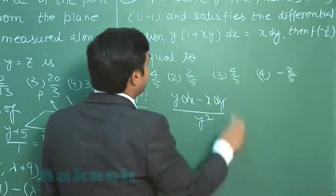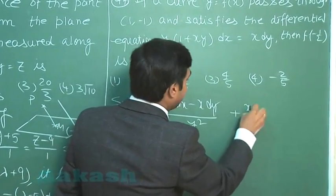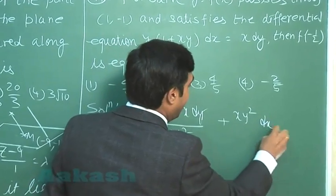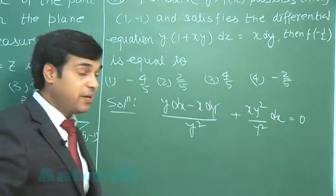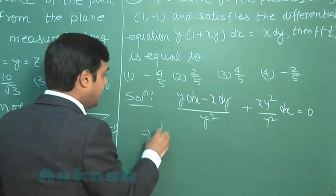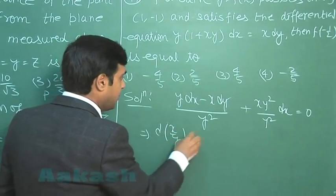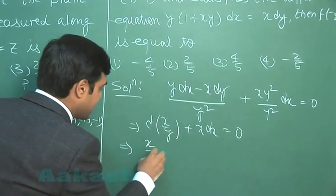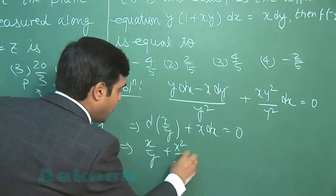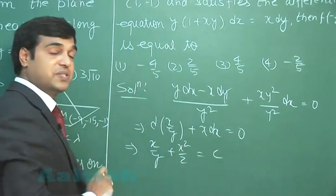Next term left with us, it is plus xy² dx divided by y². Simply we have d(x/y) plus x dx equals 0, or x/y plus x²/2 equals constant.